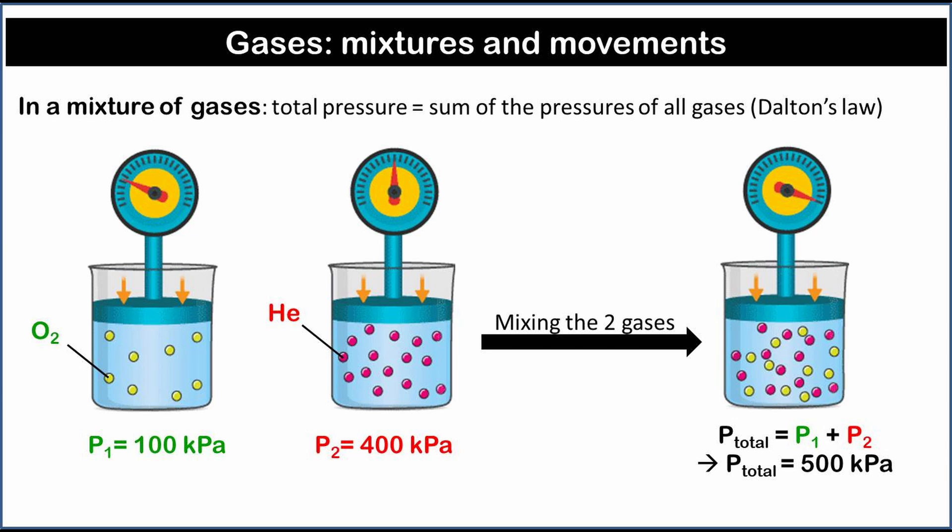In a mixture of gases, the total pressure is equal to the sum of the pressures of all gases. This figure shows how the pressures of the two gases affects the total pressure when the gases are mixed. The pressure exerted by one gas in the mixture does not affect the pressure of the other gas.